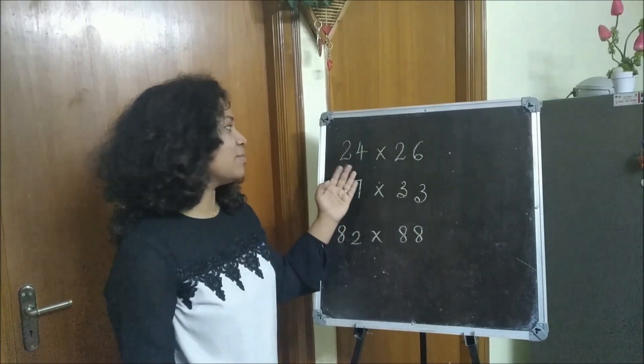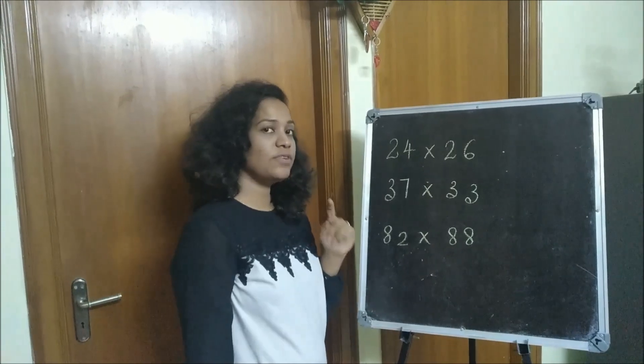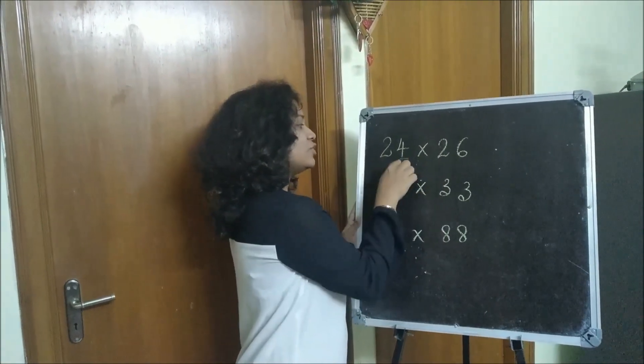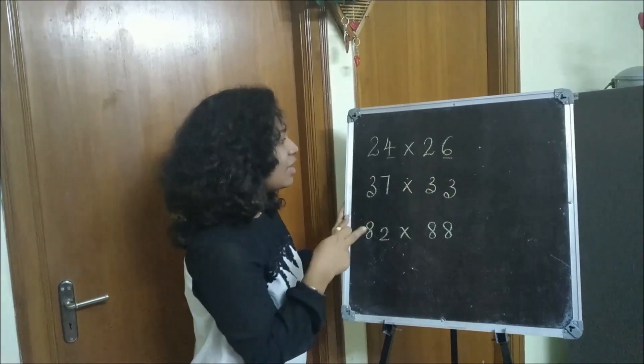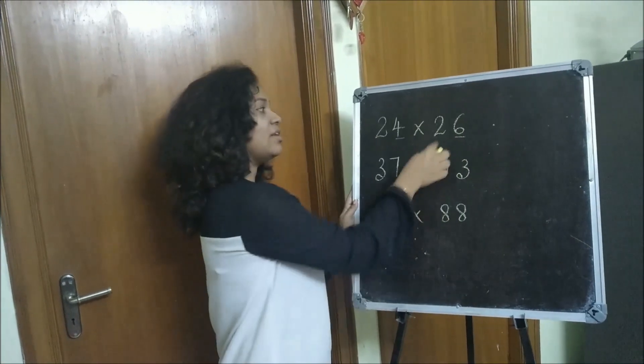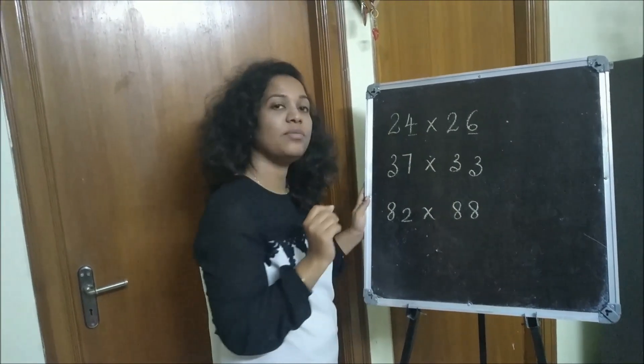Let's try to multiply these numbers, 24 into 26. As I told, the first thing we need to check is if the last digits 4 and 6 will add up to 10 or not. 6 plus 4 is 10 and the other digits are the same, so this trick can be used here.